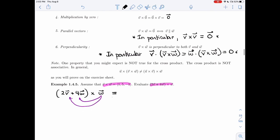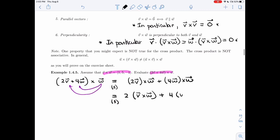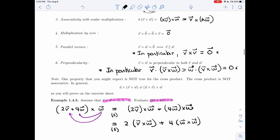And then we've also seen that you can move the constants around. So you'll get 2 times v cross w plus 4w cross w. And that's, like I noted, is using this property, which is called associativity with scalar multiplication. The k can be moved in and out of the factors.